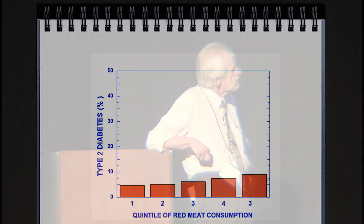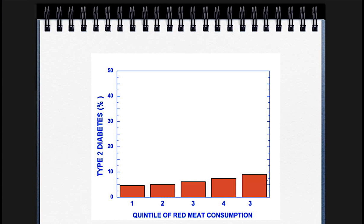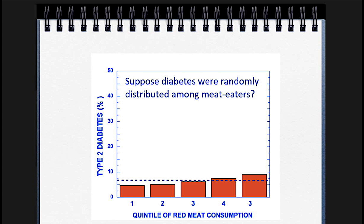What you need to look at in these studies is the absolute difference, and that's 4.3% — pretty low. It's not zero, but when you look at it from a different angle, you see it's meaningless. I took all the meat-eaters in the different quintiles and averaged them. I took the ones that got diabetes and asked: suppose this was just random, like tennis balls thrown into tin cans — what would it look like? And you can see this is so close to random that you don't want to put much on it.